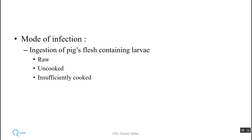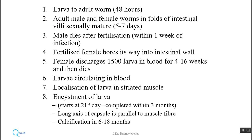Mode of infection is ingestion of pig's flesh containing the larva, which is either raw, uncooked, or insufficiently cooked — that is how the larval form remains alive in pig's flesh. Once you ingest this larval form in the pig's flesh, within 48 hours they become adult worms. They differentiate into male and female worms. Within five to seven days, the male fertilizes the female and then dies, approximately within one week of infection.